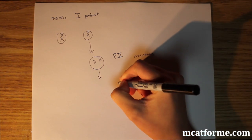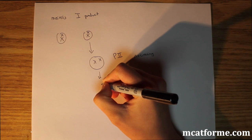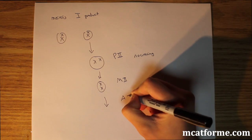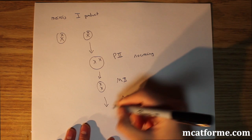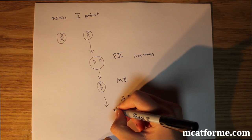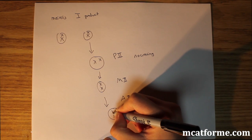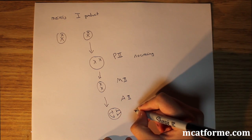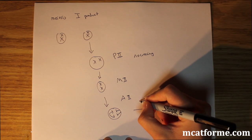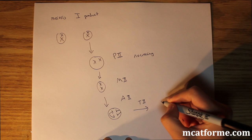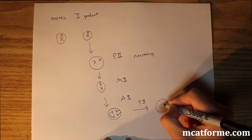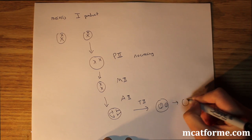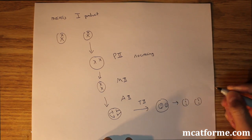In metaphase 2, we align the chromosomes. In anaphase 2, we separate the sister chromatids — not the homologous chromosomes, but rather the sister chromatids. Then we go into telophase 2, which forms the separate nuclear envelopes, and then cytokinesis produces two cells.